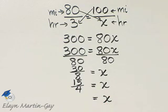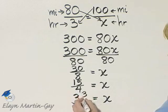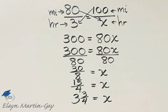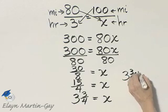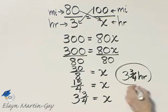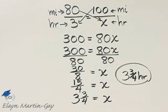4 divides into 15 three times. 3 times 4 is 12 so my remainder is 3/4. What does that mean? It means it takes 3 and 3/4 hours then to drive the 100 miles.